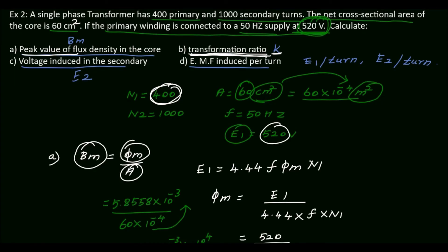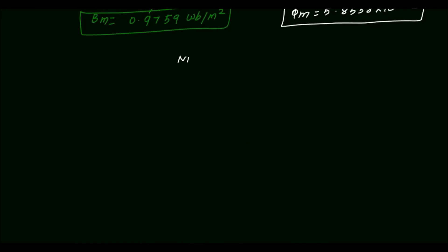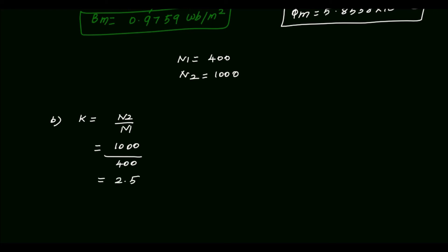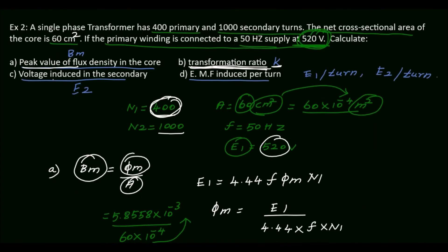Next we calculate the transformation ratio K. N1 = 400 and N2 = 1000. The transformation ratio K = N2 ÷ N1 = 1000 ÷ 400 = 2.5. So K = 2.5.